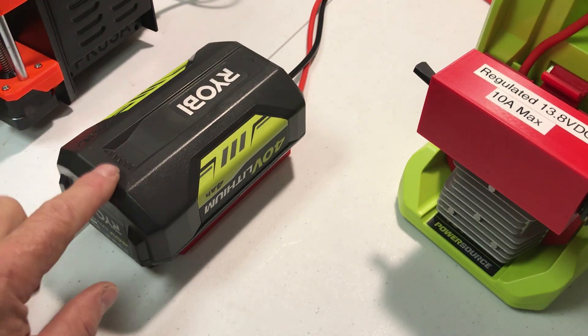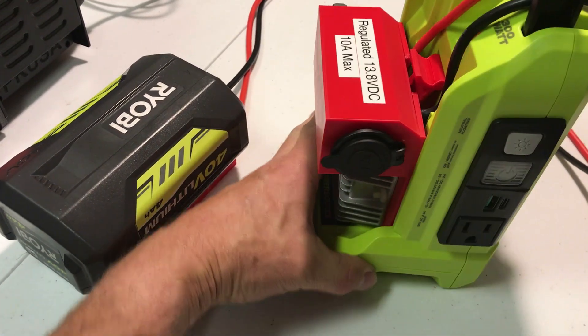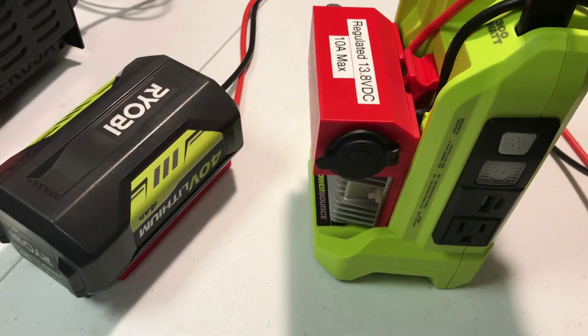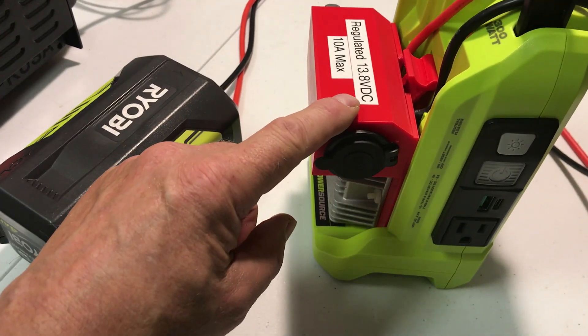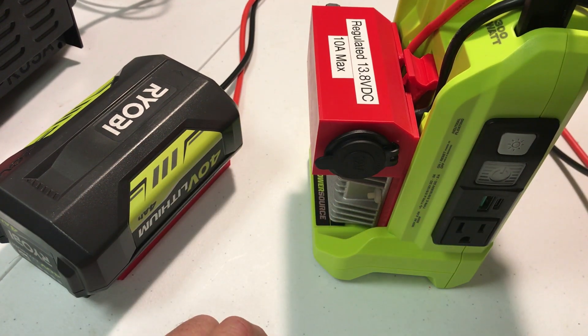So if you did have a 40 volt battery for your inverter then you could still put this adapter panel in to be able to get the regulated 13.8 volts in addition to having all the normal functionality.